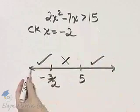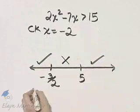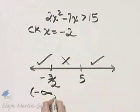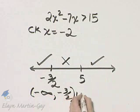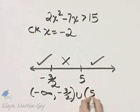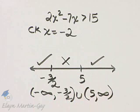So write down from left to right. It would be parentheses negative infinity to negative 3 halves parentheses union 5 to infinity. This is our solution of this inequality.